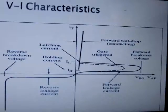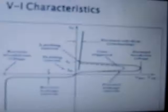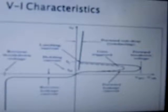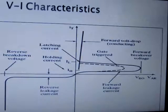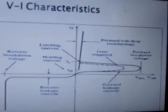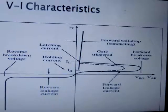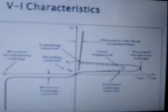These are the VI characteristics of thyristors. Four regions are present: forward blocking, forward conduction, reverse blocking shown by reverse leakage current, and reverse conduction after reverse breakdown voltage. Latching current and holding current are also defined. Holding current is the minimum current required to keep a conducting thyristor on, and latching current is the minimum current required to turn on a thyristor. So I_L is greater than I_H.